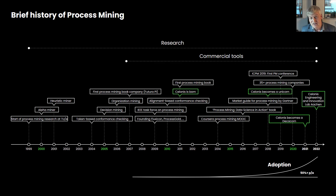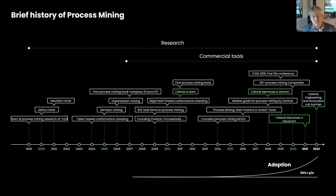This is a small timeline of process mining. I started working on the topic in the late 90s because I was very disappointed in the applicability of workflow management technology. In many projects, I saw that workflow management technology failed because the actual processes were much more complicated than what people liked to believe. For quite some time, me and my group were the only people in the world systematically researching this field — automatically learning process models that show where the real problems are.